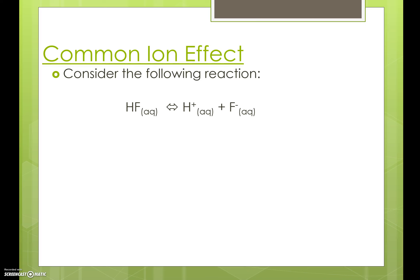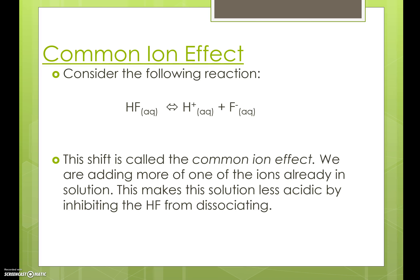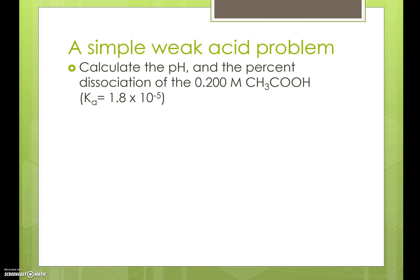This will alter our pH; however, the problems are going to involve the same steps that we've been working on all along. So let's look at a simple weak acid problem. We want to calculate the pH and the percent dissociation of a 0.200 molar acetic acid solution, and the Ka is 1.8 times 10 to the minus 5. That tells us we're looking at a weak acid, and the first thing we want to consider is what are the major species in this solution — acetic acid with Ka = 1.8×10⁻⁵ and water with Kw = 1×10⁻¹⁴.